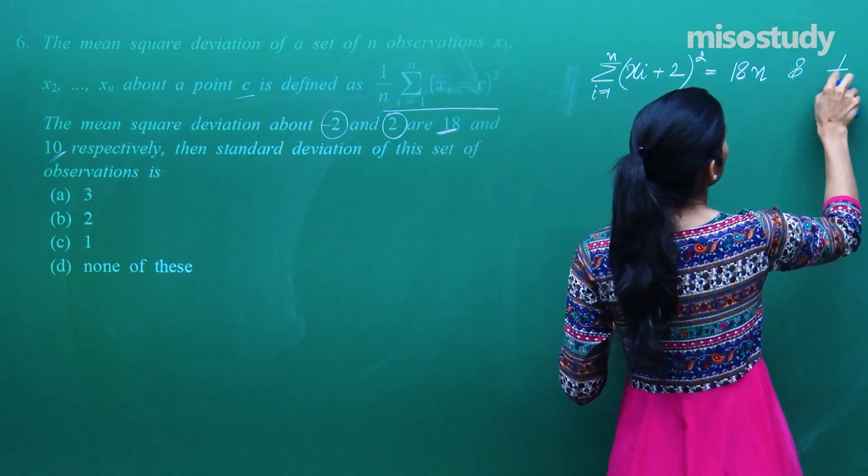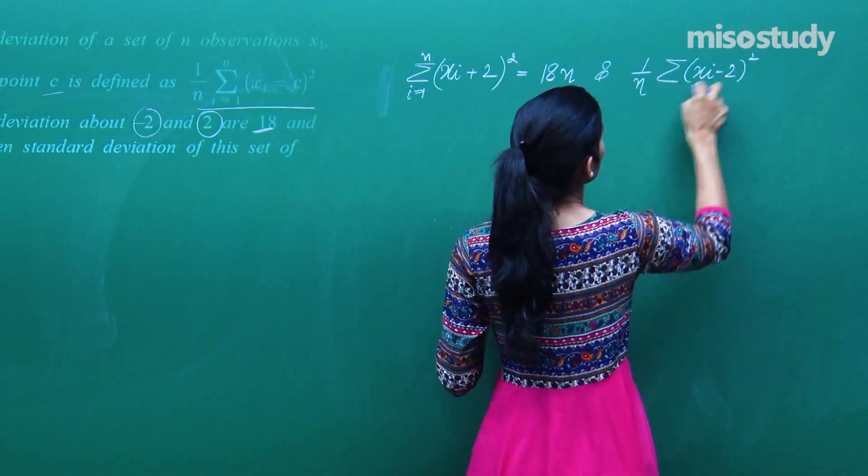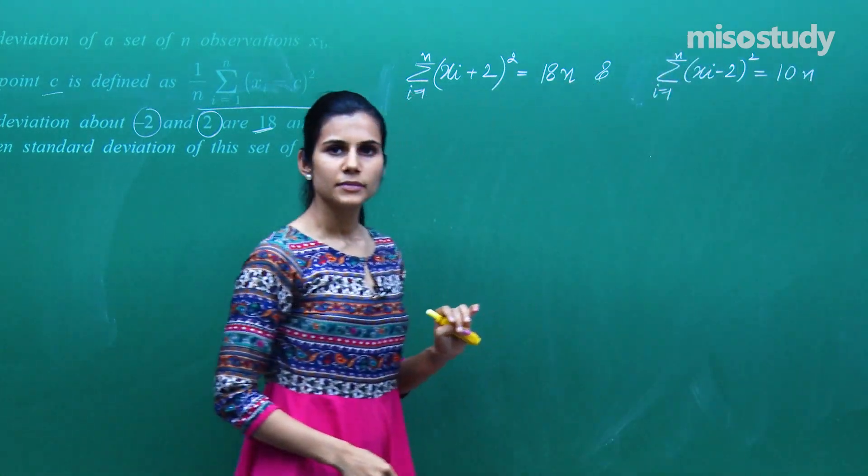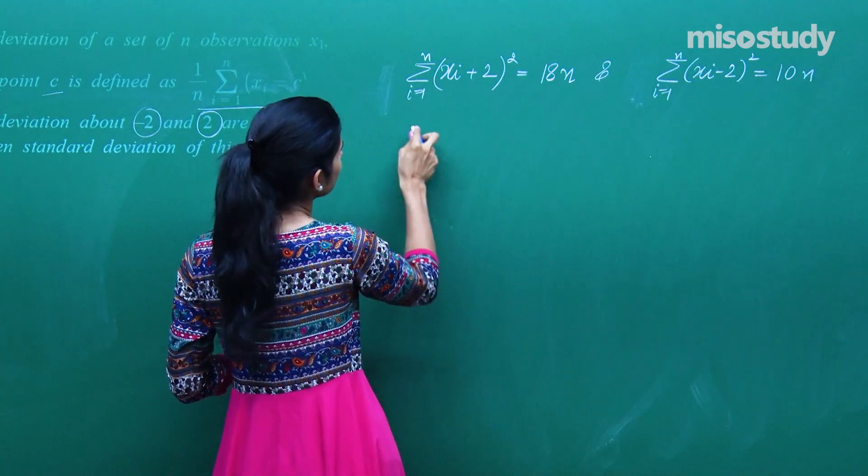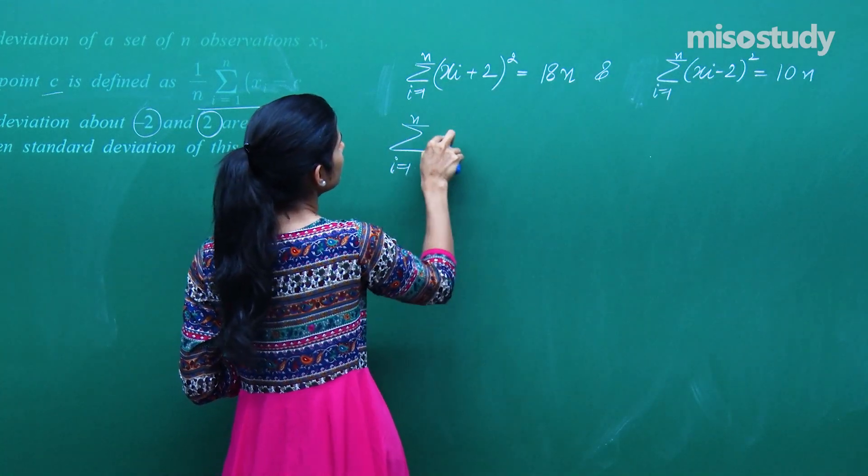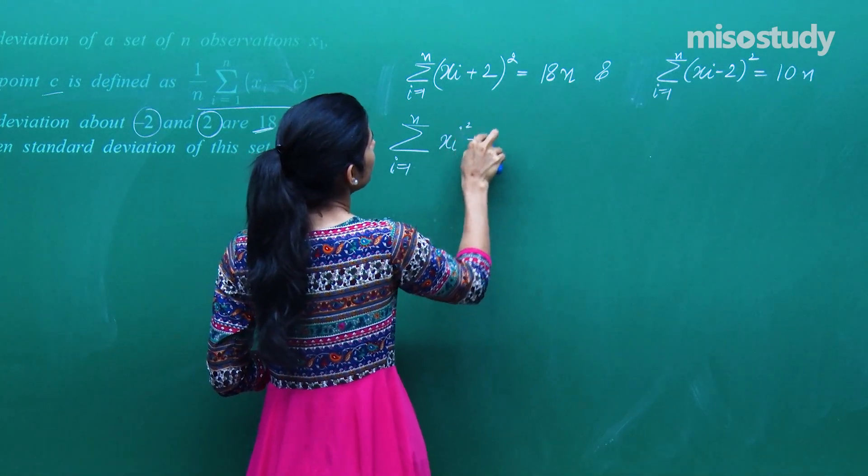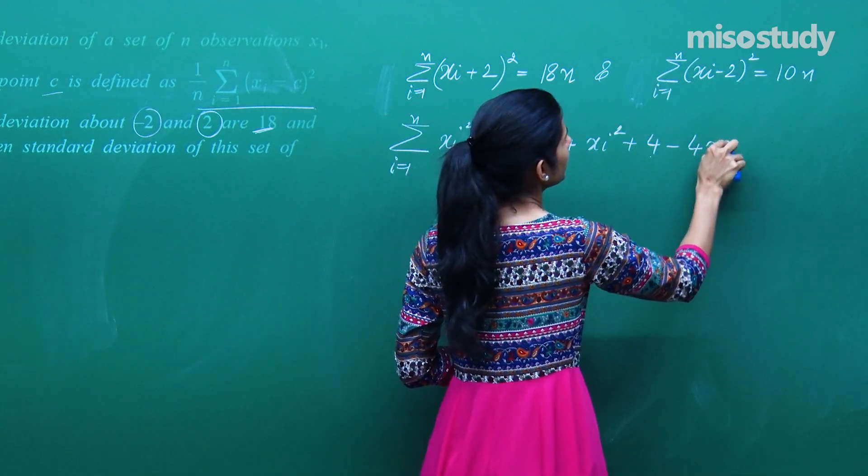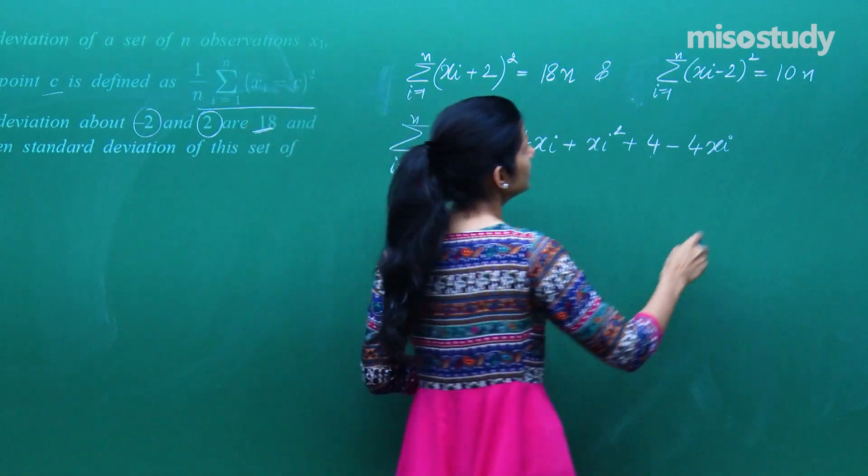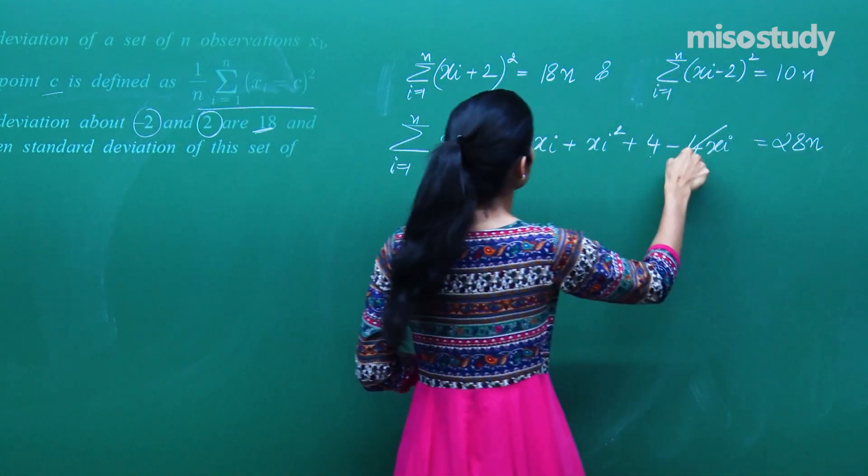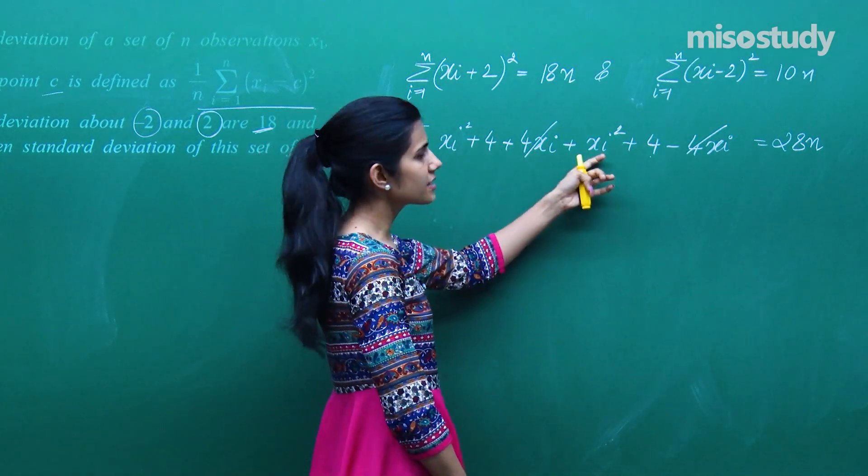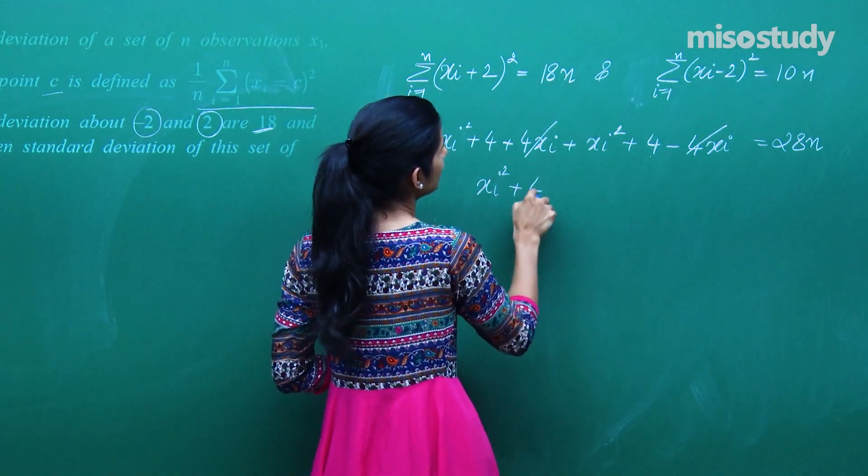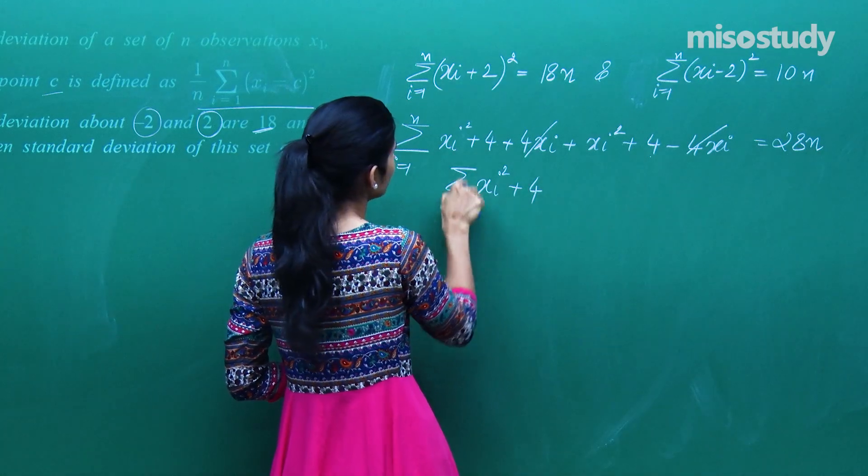And I am given 1 by n summation xi minus 2 ka whole square, i going from 1 to n is 10. So this will be 10n. Xi square plus 4 plus 4xi plus xi square plus 4 minus 4xi. 2 xi square plus 2 times 4. So 2 comes out common, goes over there.